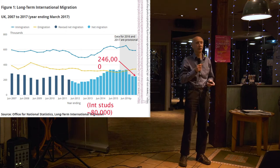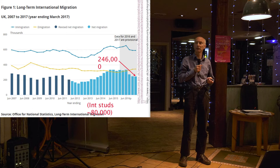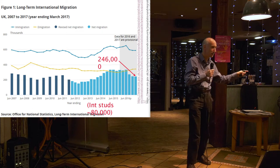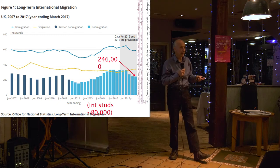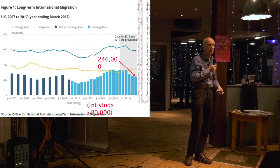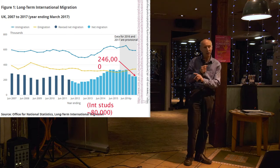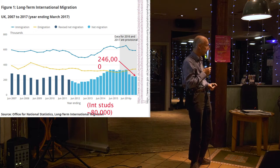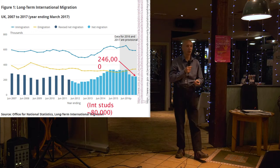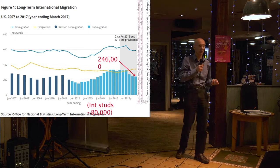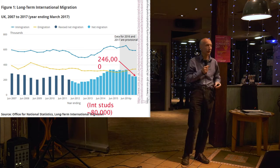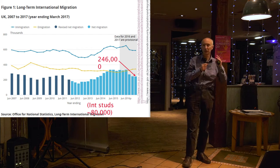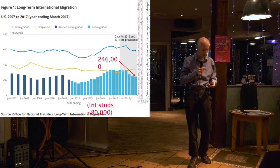Are there any international students in the room? The reason that matters is because it was in Amber Rudd's statement — how many of those people are international students, whether they should be included in these numbers at all, and what 'long-term' means for students are all really contested issues. Some figures might say they contribute about 80,000 to that number, so it matters a lot as to whether you're going to hit any particular target.